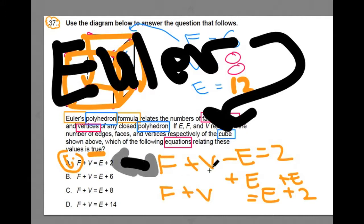Faces plus vertices minus edges is equal to two, and that could be manipulated to faces plus vertices is equal to edges plus two, and hey, maybe it's something worth memorizing.